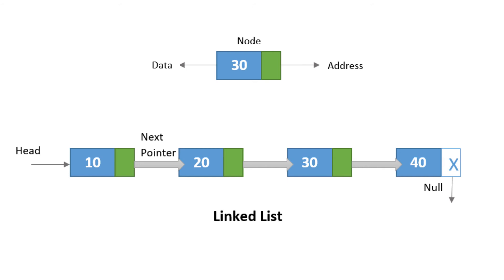A linked list has two parts: a data section and an address section. The address section holds the address of the next element in the list, called a linked list.